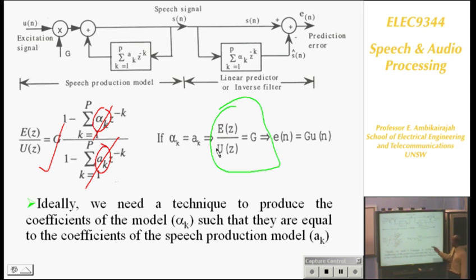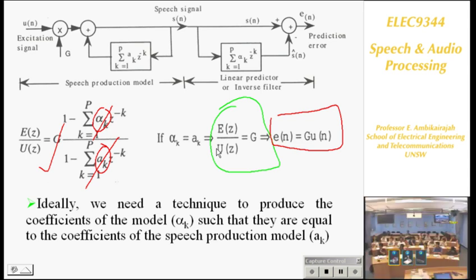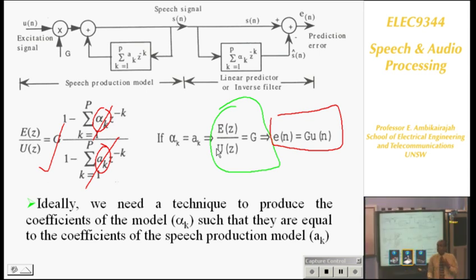If these coefficients are equal, they cancel out. What you have then is this particular transfer function. Taking the inverse transform: E(n) — the error sample — equals G times the excitation U(n). So what does that mean? You have speech coming in, a linear prediction model, and the output is an error. That error equals the excitation. You can't access the excitation directly, but through the model you can get those values.